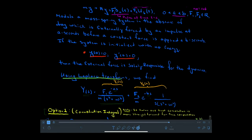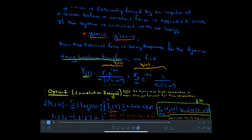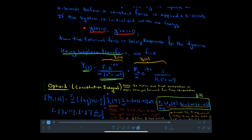We'll solve this using the Laplace transform. Taking the Laplace transform of both sides and solving for Y(s), it comprises two terms. The first term Y1(s) is due to the Dirac external force — the response to the pulse in the Laplace domain. The second term Y2(s) is the response due to the step function external force. Both terms pick up an exponential factor telling us that something is happening with a time delay in the time domain.